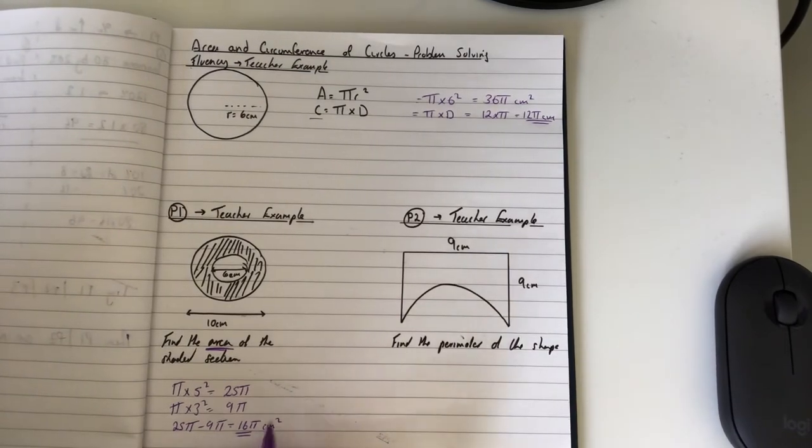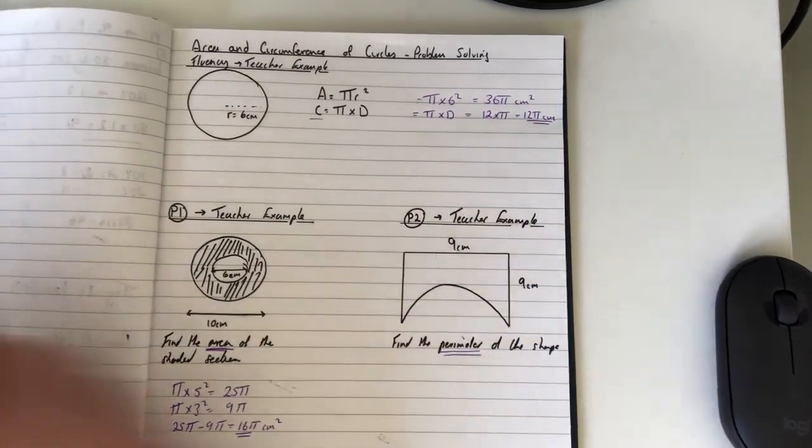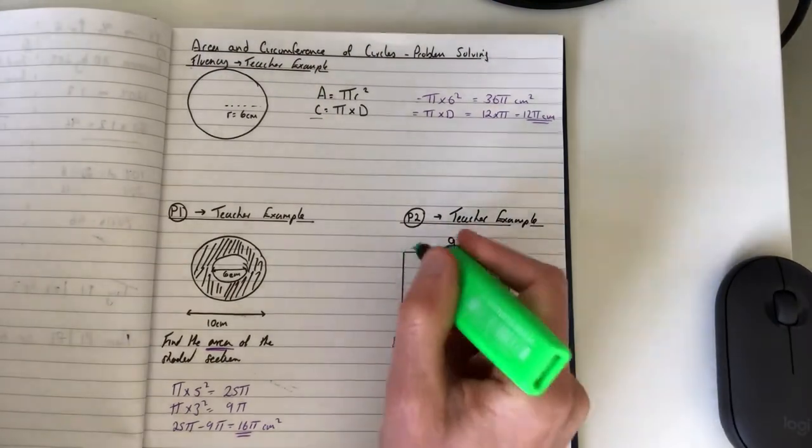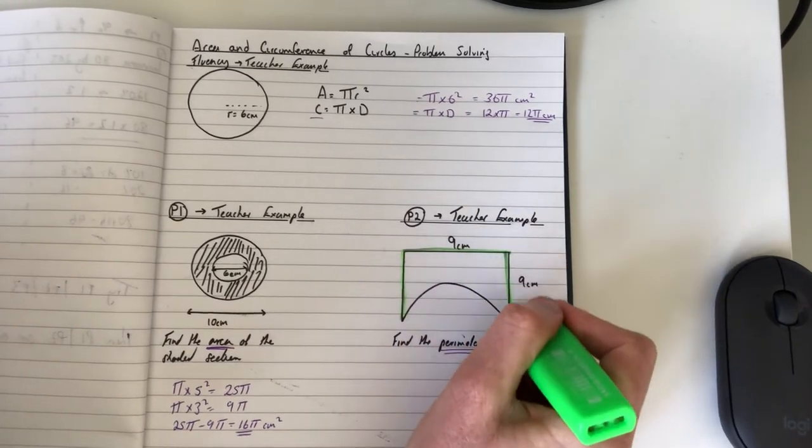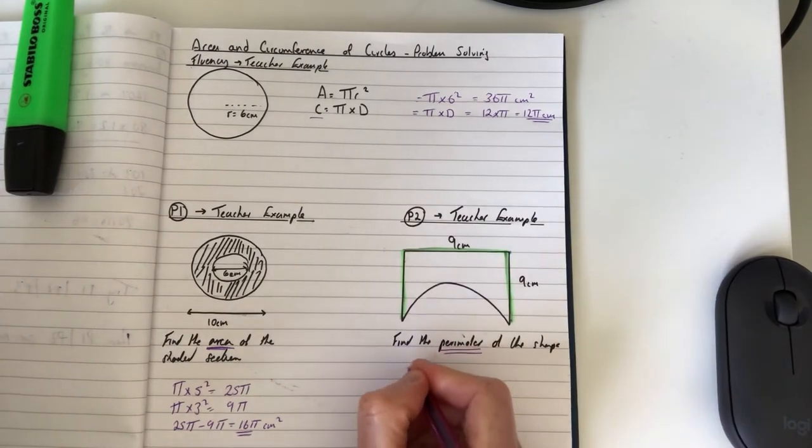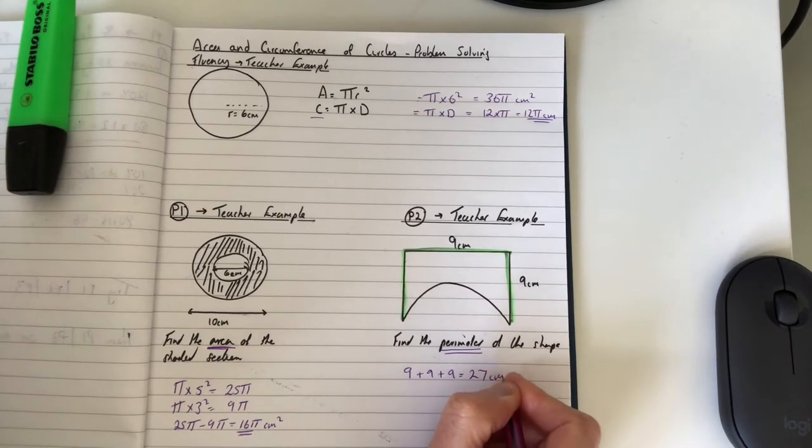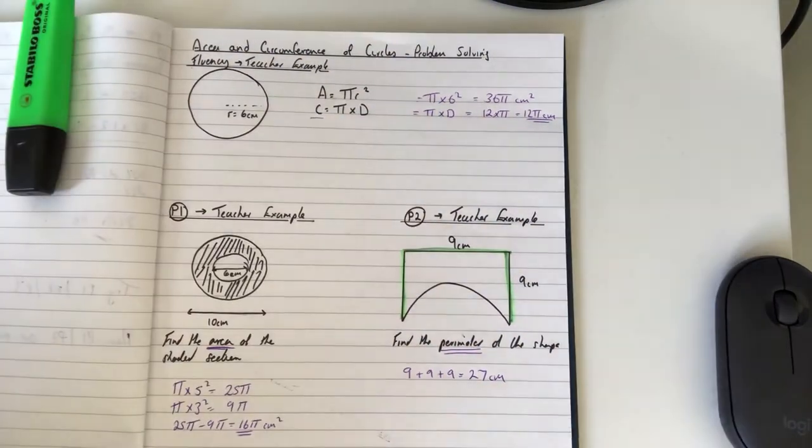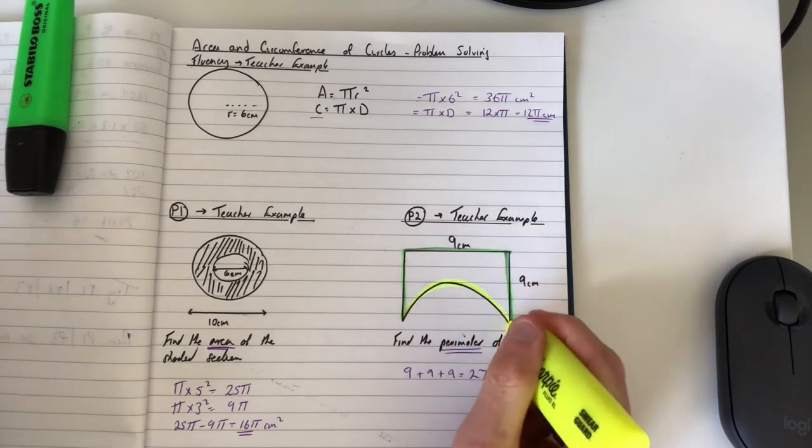Now when you move on to P2, you're working out the perimeter of a shape. The perimeter is the outside, so we've got three lots of nines, which would be 9 + 9 + 9, which is 27 centimeters.